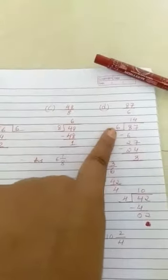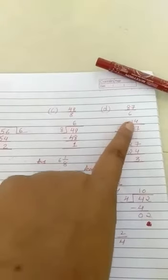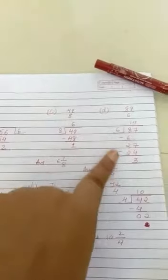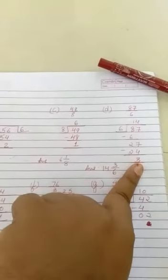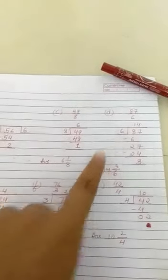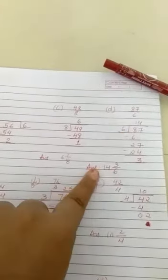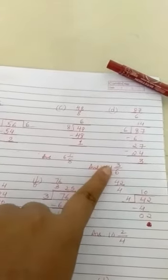Now moving on to 87 by 6. 87 comes in the 6 table at 84, so we are left with the remainder 3. So we will take the remainder as the numerator, divisor as the denominator, and the quotient as the digit in front of these two fractions.